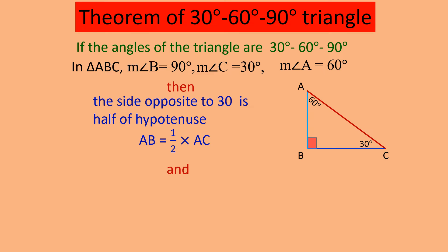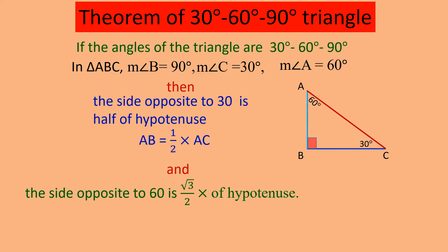And the side opposite to 60 degrees — you can see here — is BC. So we get BC equals root 3 upon 2 into AC. That means the side opposite to 60 degrees is root 3 upon 2 times the hypotenuse. I hope that is clear.